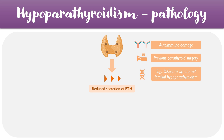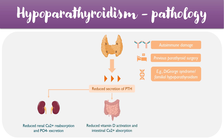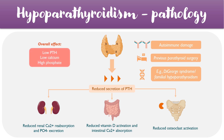In the renal system, there's a reduction in renal calcium reabsorption and less phosphate excreted into the urine. In the GI system, there's reduced vitamin D activation and therefore reduced calcium reabsorption. And in the skeletal system, there's reduced osteoclast activation. The overall effect of this is therefore a low PTH level, a low calcium level because less is being reabsorbed, and a high phosphate level because less is being excreted.